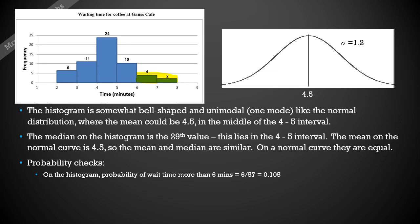That's this section here. We've got six of those cups of coffee took more than six minutes to make, so that six out of 57 gives us 0.105. If we do the same thing on our normal curve, we're looking for how many would have been above the six. So what's the chance of a cup of coffee taking more than six minutes to make? It's this right hand tail.